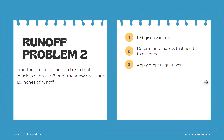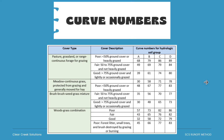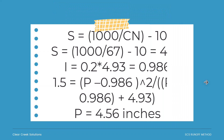For problem number two: find the precipitation of a basin that consists of group B, poor meadow grass, with 1.5 inches of runoff. We follow the same process — list the given variables, determine what needs to be found, and apply the equations. Looking at the curve number chart for group B, poor meadow, continuous grass, we find a curve number of 67. So S equals 1,000 divided by 67 minus 10, which equals 4.93. The initial abstraction is 0.2 times 4.93, which equals 0.986. Then, using the equation: 1.5 equals P minus 0.986, squared, divided by P minus 0.986 plus 4.93. Solving the quadratic equation, we find that P equals 4.56 inches of precipitation.